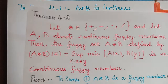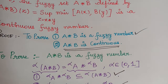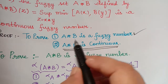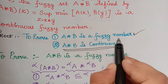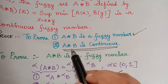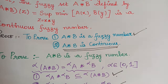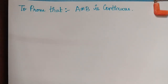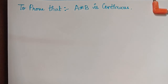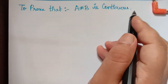Hello students. In our previous video we have been proving a theorem with two parts. One part — that a★b is a fuzzy number — has already been proved. Now we are going to prove that a★b is continuous. This is a continuation video, so if you want to understand the complete theorem, first finish the previous two videos which have been uploaded.